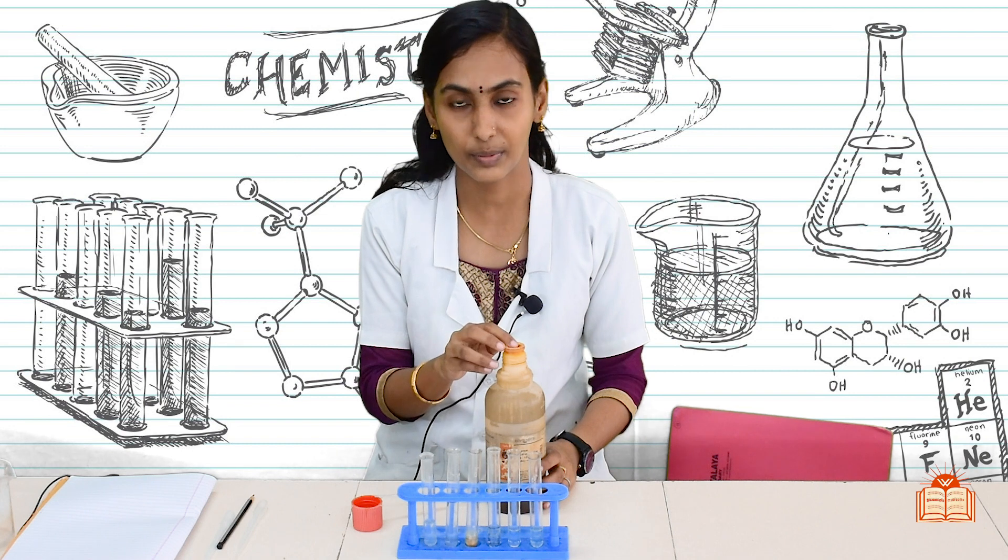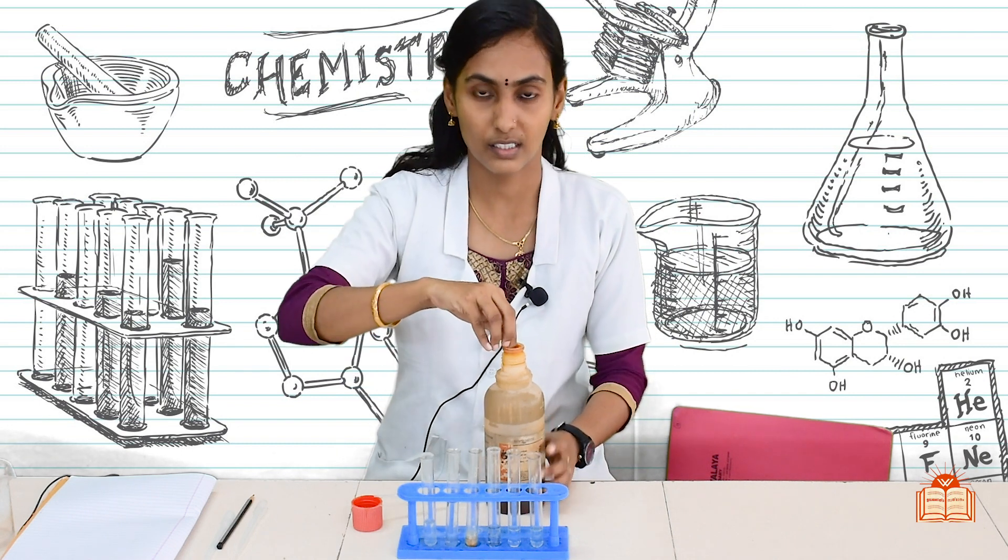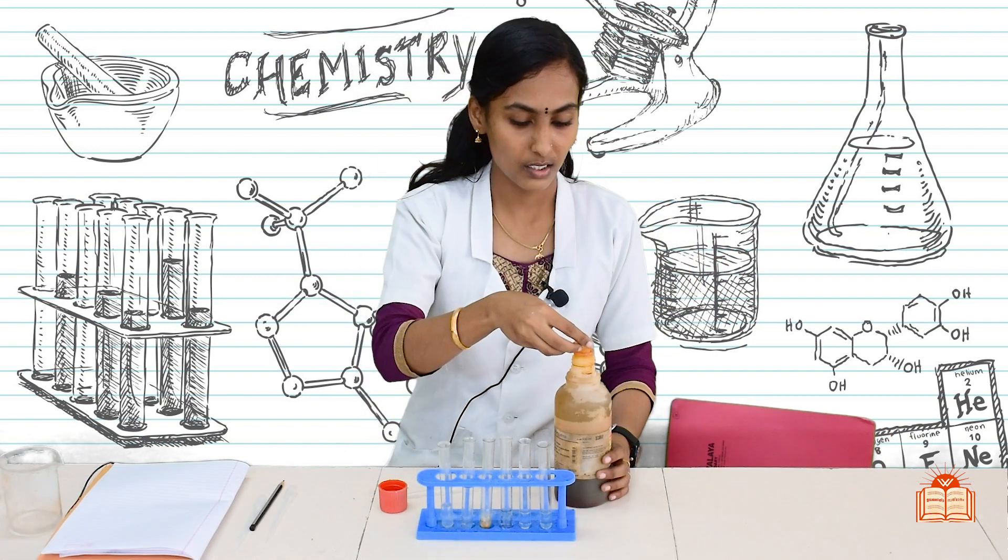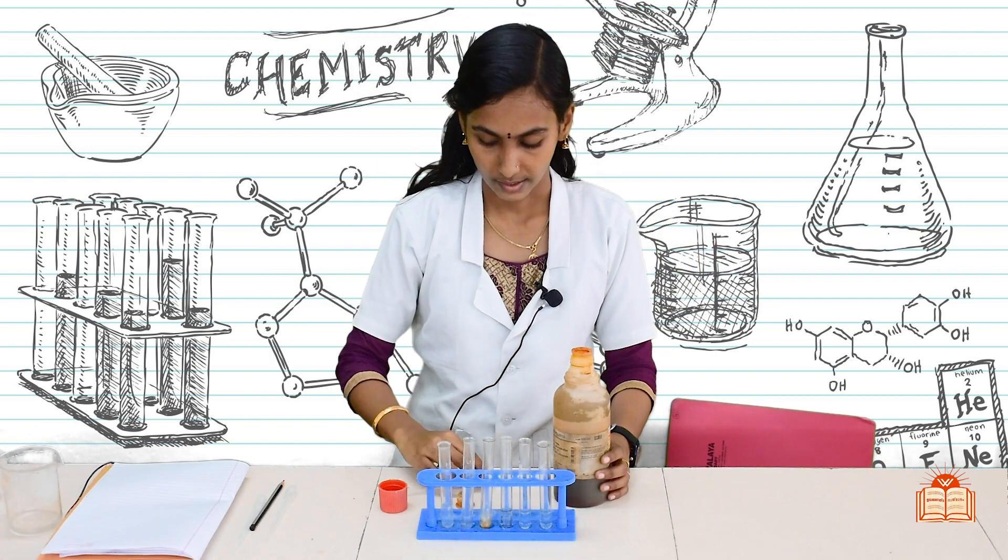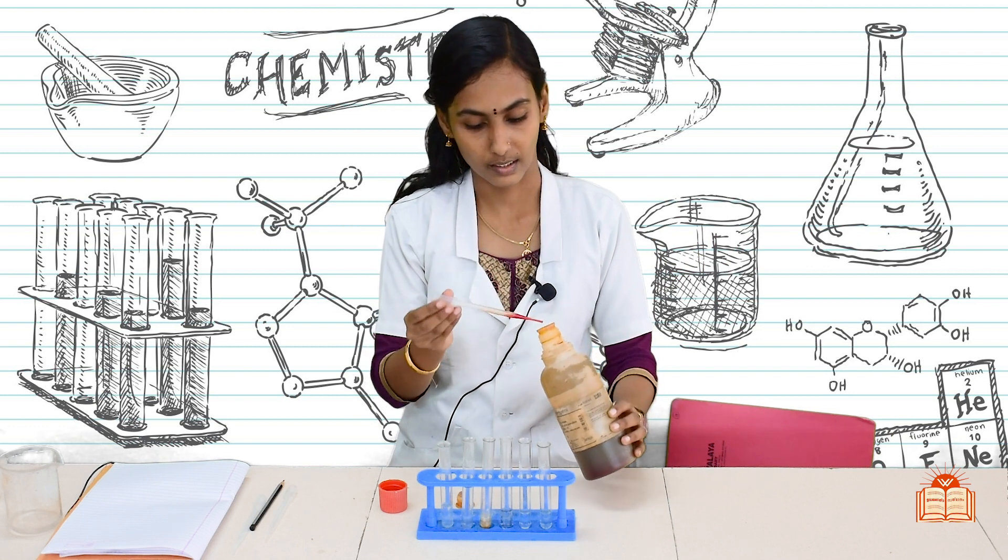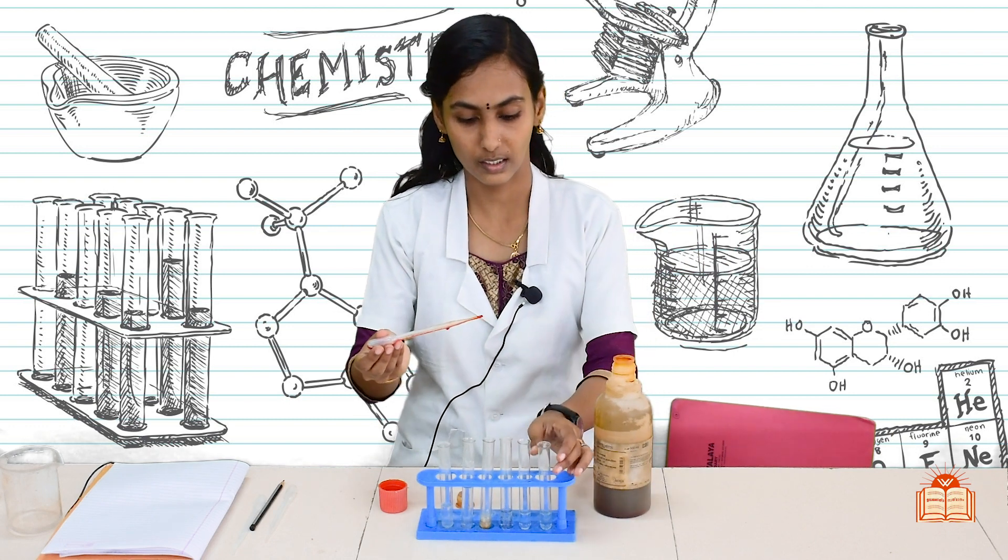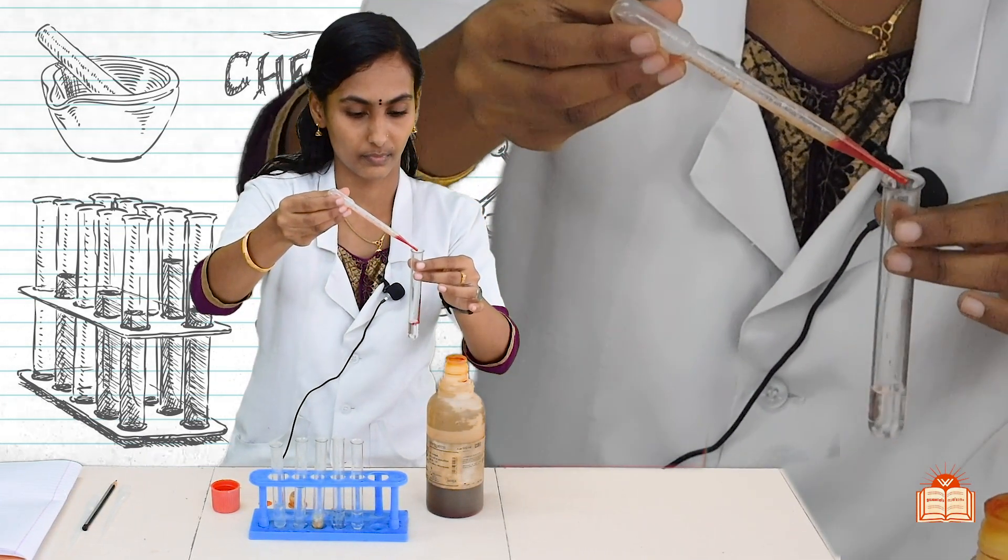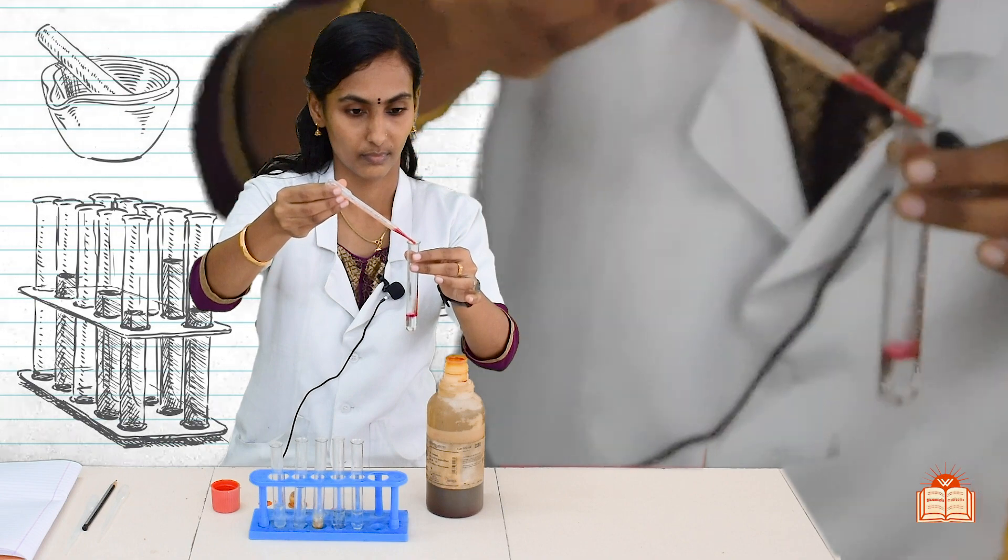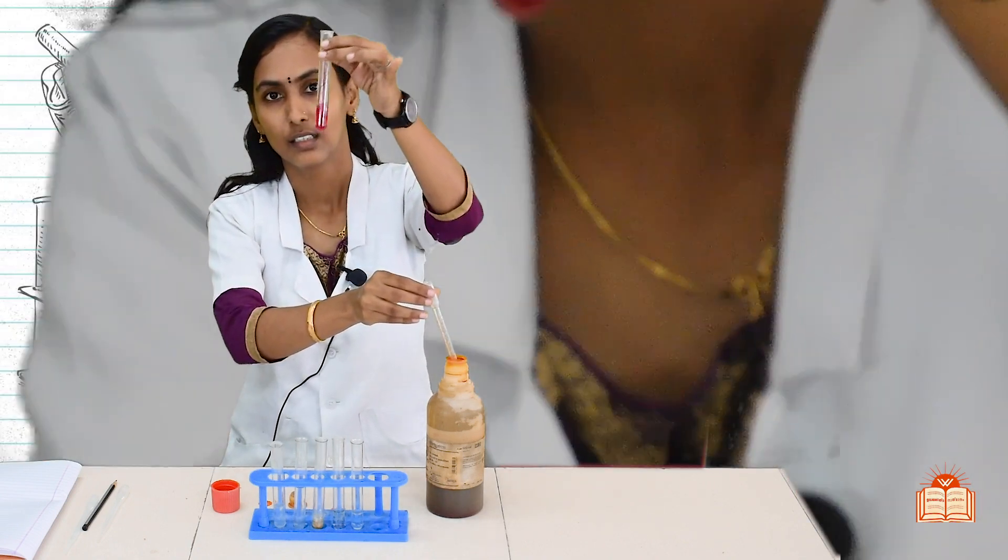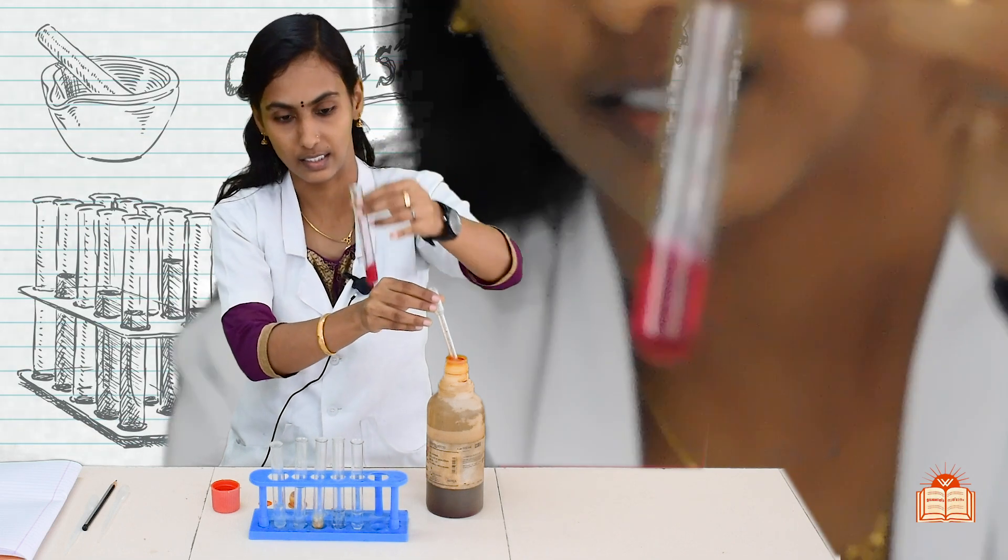You will get various colors and as per the colors and the pH scale, we can identify the strength of acidic or basic solution. Using this solution, we can identify the nature of the substances. Take some drops of universal indicator and add this to dilute HCl solution first. See, what is the color? It turns to dark pink color.